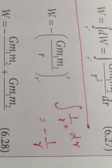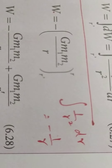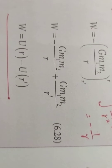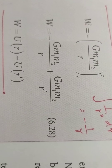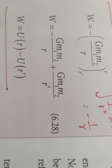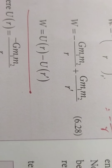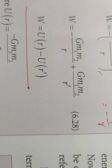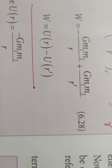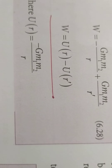Substituting the upper limit minus the lower limit: W equals minus G·M1·M2 by R plus G·M1·M2 by R-dash. The first term can be taken as U(R) and the second term as U(R-dash), giving W equals U(R) minus U(R-dash), where U(R) equals minus G·M1·M2 divided by R. Only the distance is varying — one is at distance R and the other at distance R-dash.